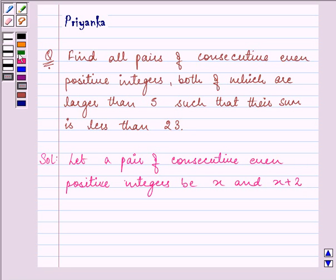Now, the condition is both of which are larger than 5, that means x has to be greater than 5. And such that their sum is less than 23.